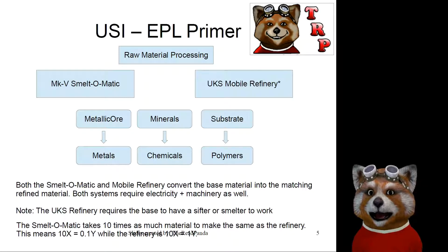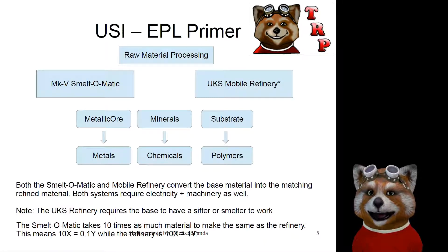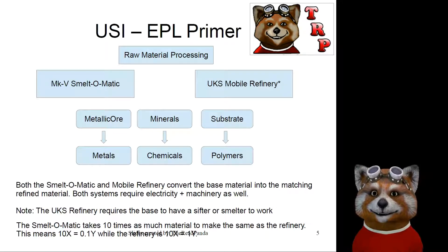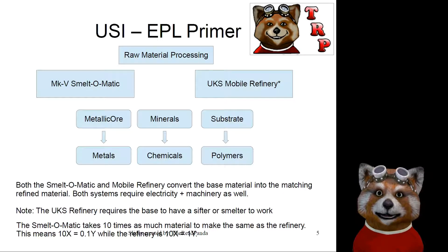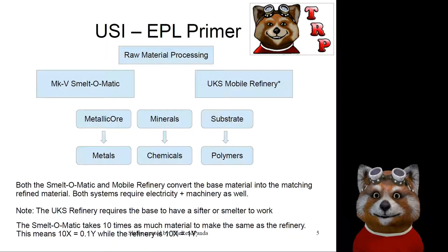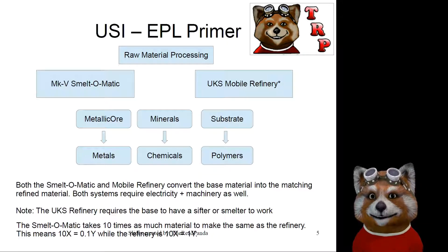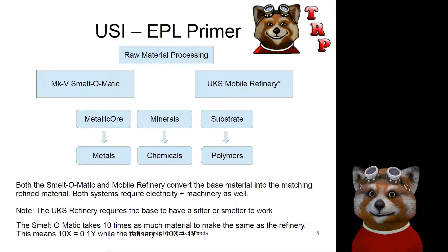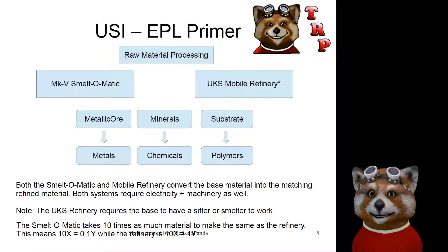Once you've got your raw materials, the three we're most concerned with today are metallic ore, minerals, and substrate — because those turn into metals, chemicals, and polymers, which we'll need for our later stages. The Mark V Smelt-O-Matic is a small side piece you can attach for early colonization purposes. The UKS Mobile Refinery is a much larger piece. The Smelt-O-Matic takes ten times as much material: for every 100 metallic ore you get one metal using the Smelt-O-Matic, whereas with the mobile refinery it's 10 to 1 — for every 10 metallic ore you get one metal.